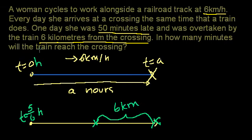In how many minutes will the train reach the crossing? If we can figure out what this time is, we know that the train reaches the crossing at t equals a. So if we know this time, we could just find the difference between these two times and we would have solved the problem.